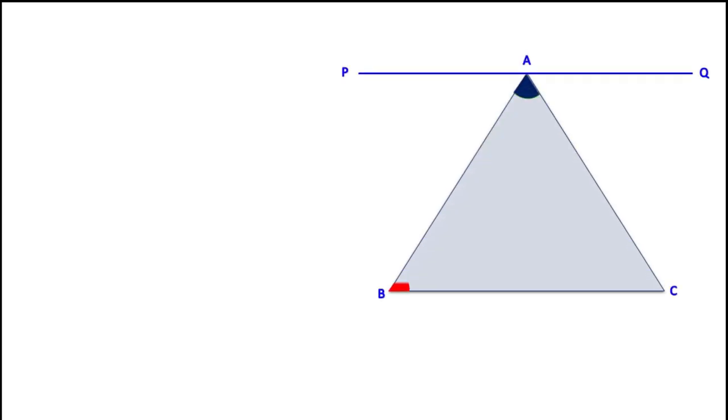Draw a parallel line PQ through A to BC. Now, angle PAB plus angle BAC plus angle QAC is equal to 180 degrees.